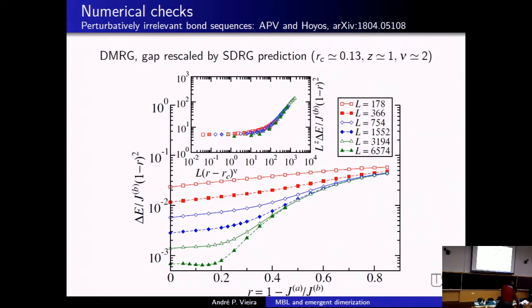We rescale the plots by the SDRG prediction to show that we actually go to the SDRG prediction for the gap at large modulation. We also do a finite-size scaling of the gap plots and get a beautiful scaling with the predicted value of the transition modulation, with a dynamical exponent equal to one and nu exponent equal to two.